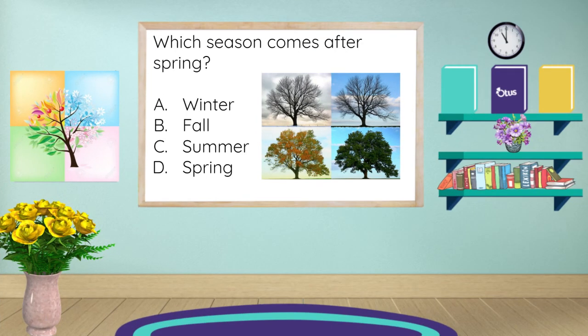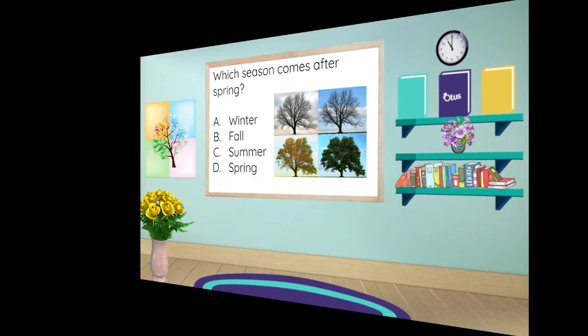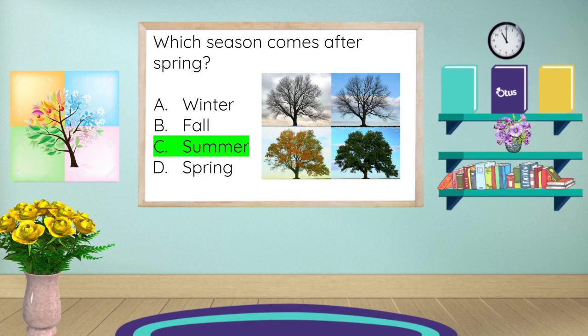Which season comes after spring? A, winter; B, fall; C, summer; or D, spring? Yes, it's summertime. Right after springtime, we go into the summer season. Great job, everyone.